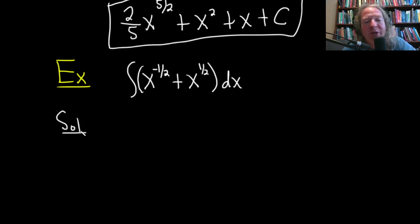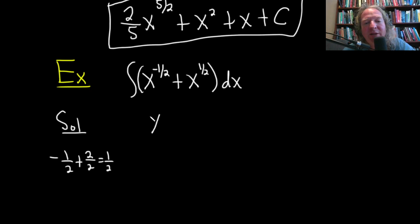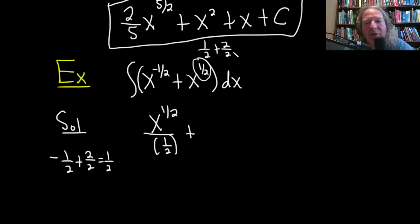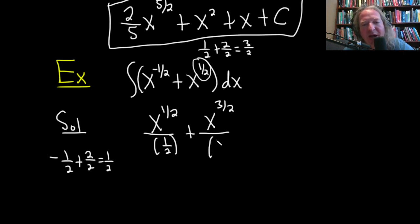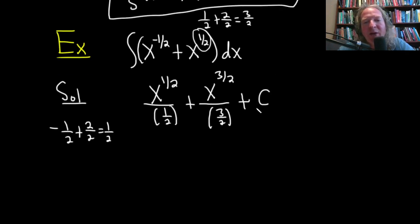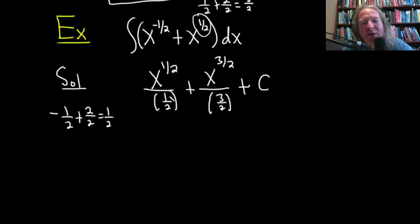Here we can use the power rule twice. Adding 1 to negative 1/2: that's negative 1/2 plus 2/2 which is 1/2, so it'll be x to the 1/2 divided by 1/2. For the second term, 1/2 plus 1 is 1/2 plus 2/2 which is 3/2, so it's x to the 3/2 divided by 3/2, then our constant of integration capital C.